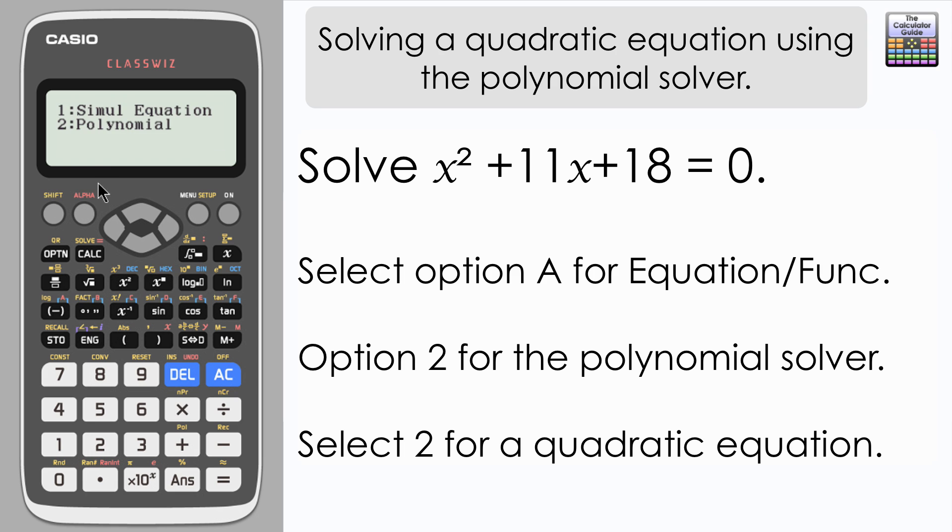Press equals and we see that the polynomial solver is option 2. The Casio ClassWiz can solve polynomials up to a degree of 4, that's x to the power of 4, but in this instance we want a quadratic equation that's x to the power of 2, so I'm going to select 2.